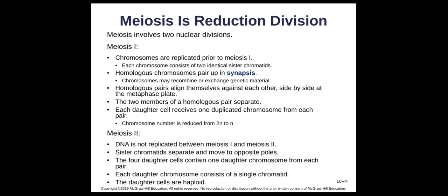After meiosis I, we go into meiosis II but the DNA is not replicated again — there's only one DNA replication, then meiosis I straight into meiosis II. In meiosis II, it looks like mitosis: sister chromatids separate, move to opposite poles, and we end up with four daughter cells, each having one chromosome from each pair with just one chromatid, and these cells are haploid.